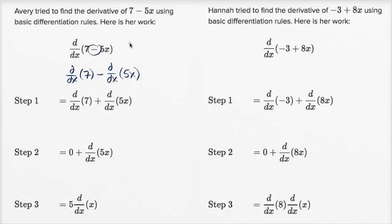Or she could have said this is equal to the derivative of 7 plus the derivative with respect to x of negative 5x. These two things would have been equivalent to this one, but for this one she somehow forgot to include the negative. So I think she had a problem right at step one.